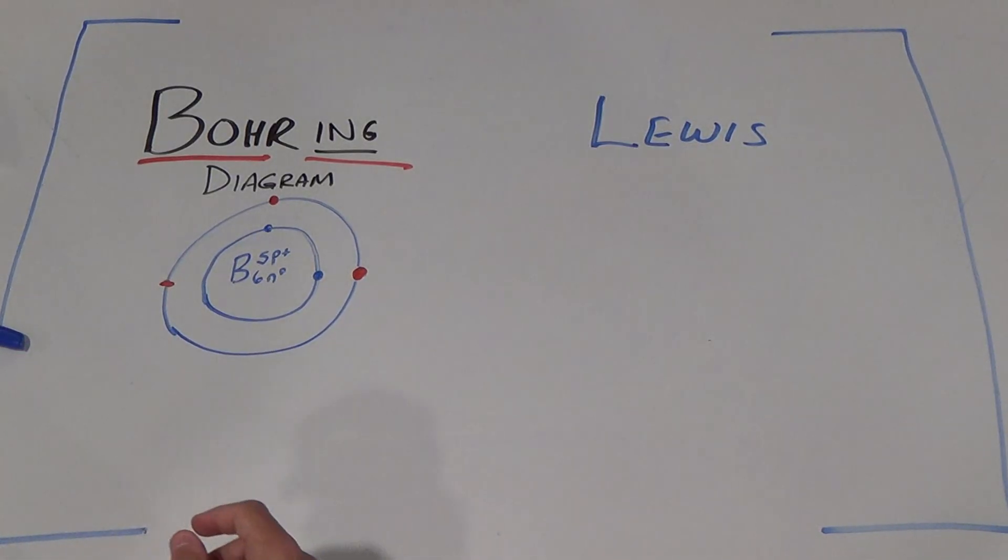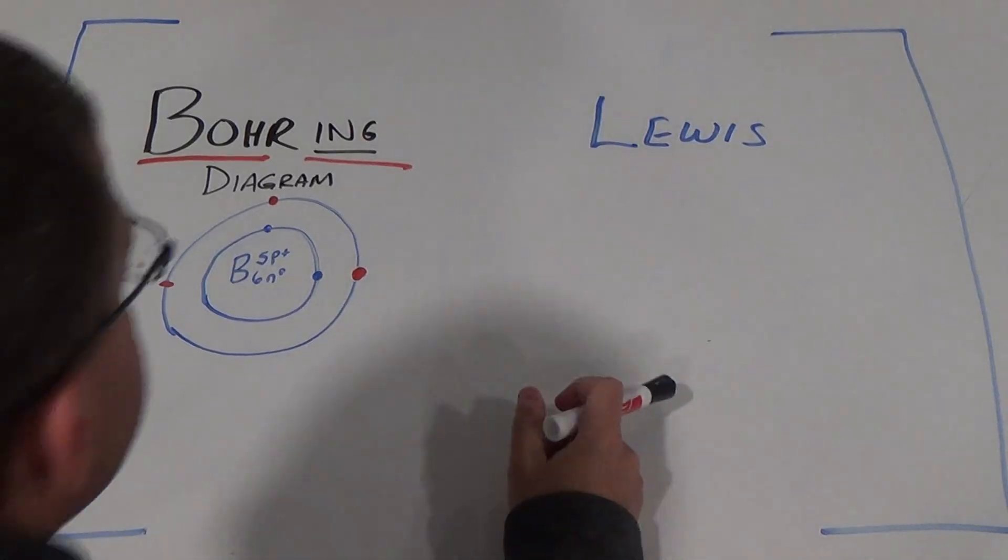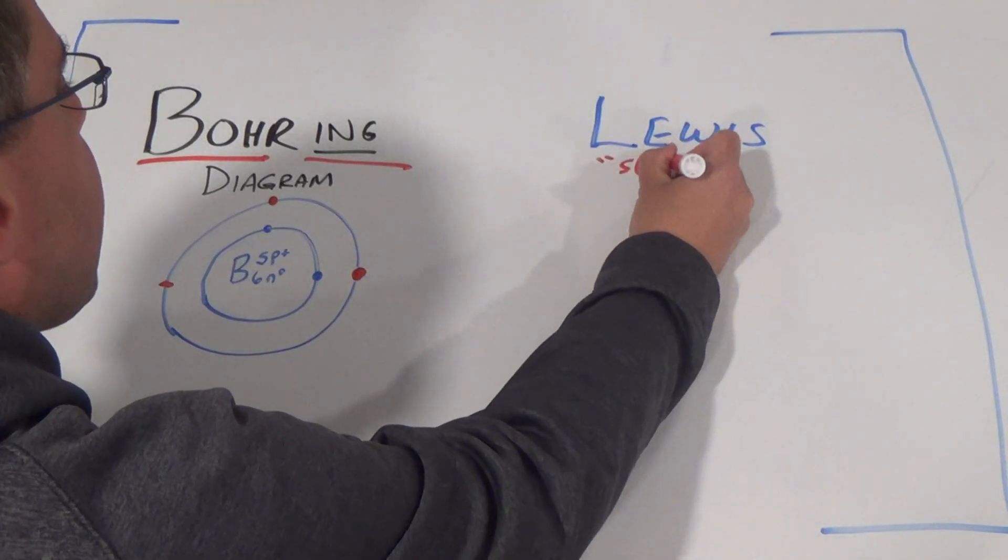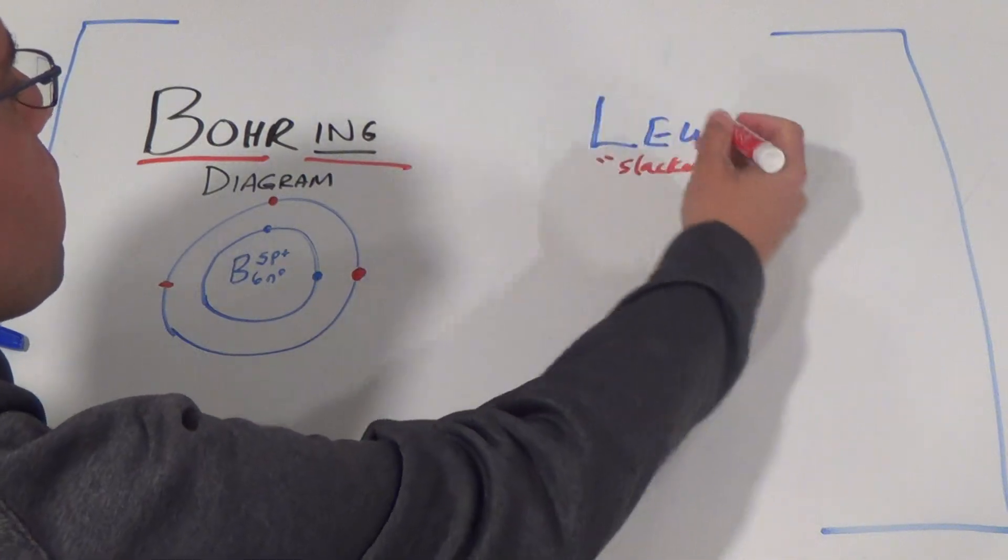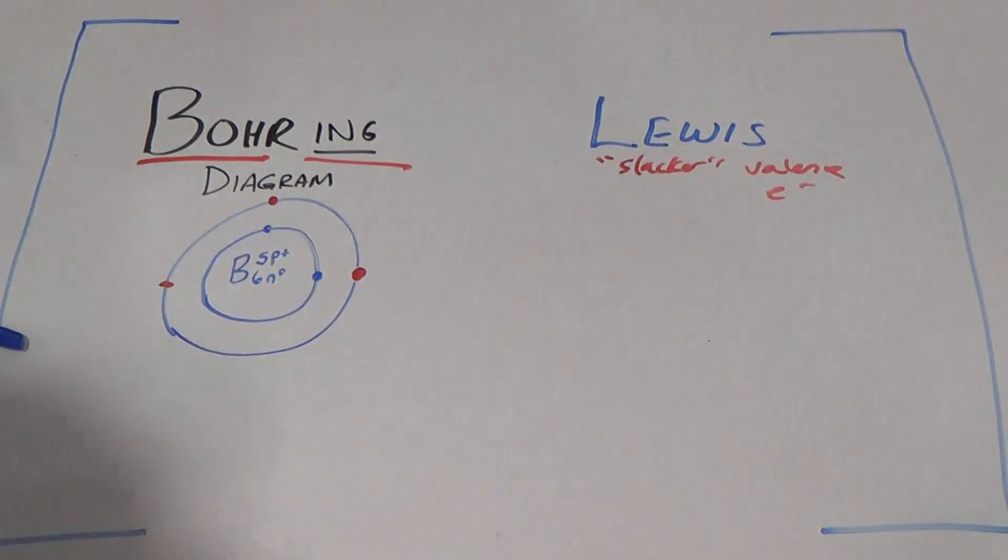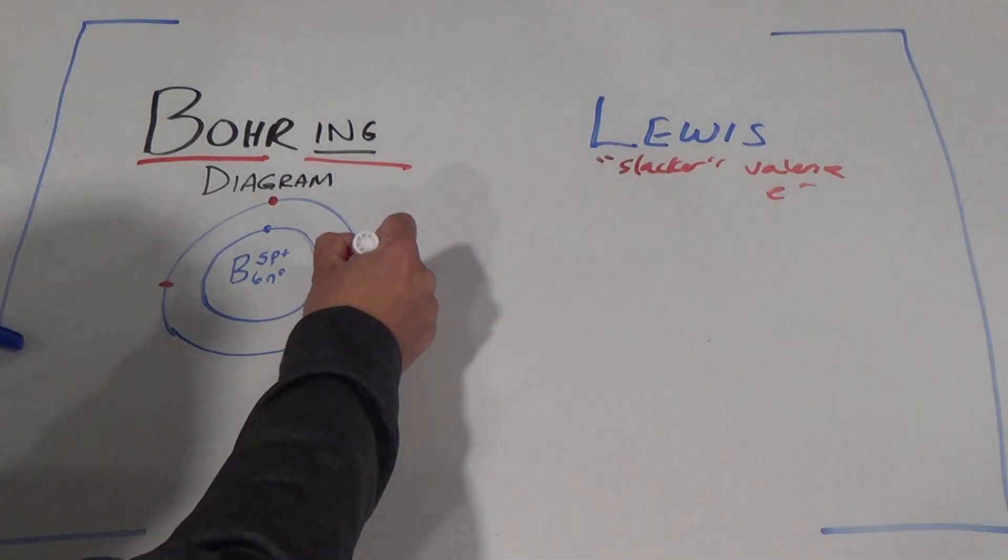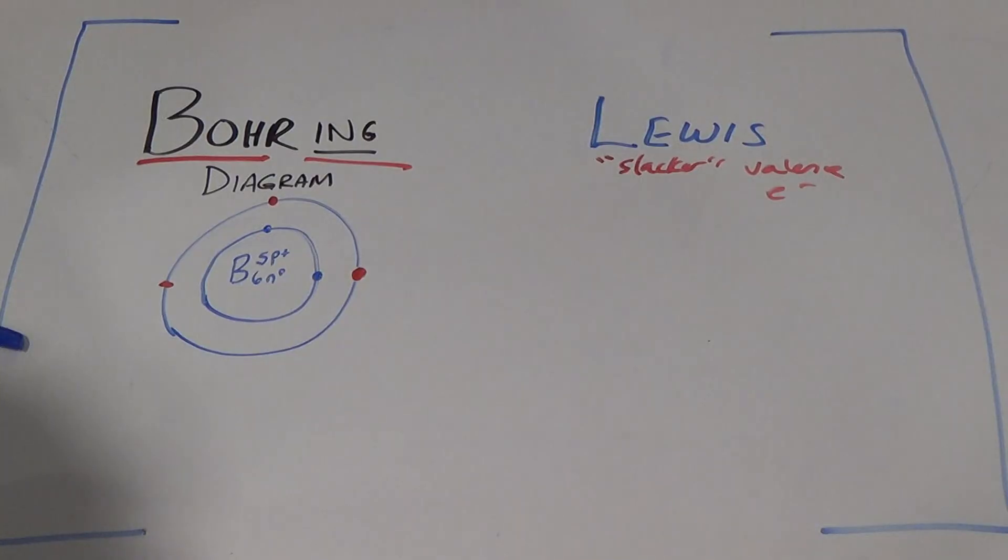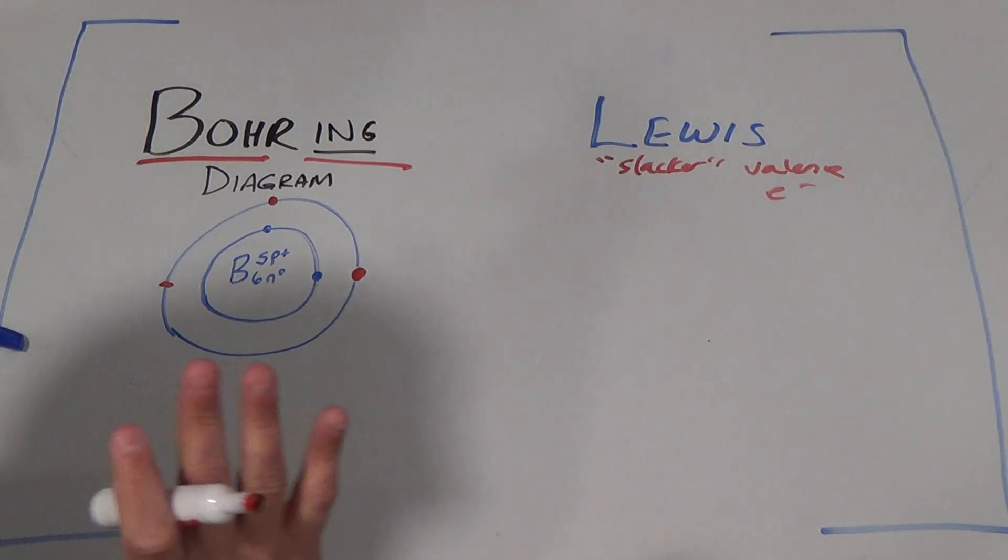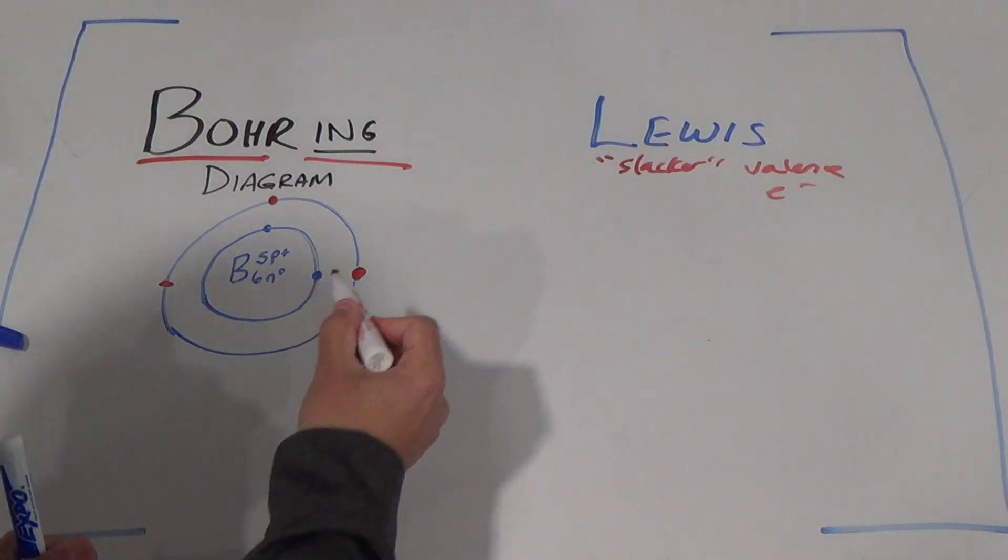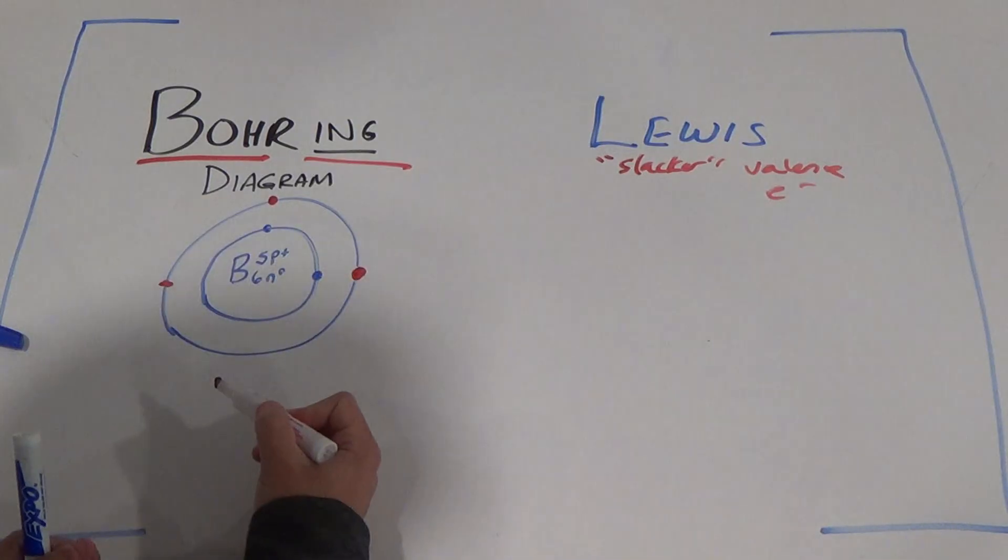So now let me introduce you to our guy. His name is Lewis. He's kind of a slacker, actually brilliant. He only wanted to draw just the valence electrons. And we know the valence electrons are the ones on the outside part of the atom. You'll learn that they're the ones involved in chemical reactions and they're actually going to be really important.